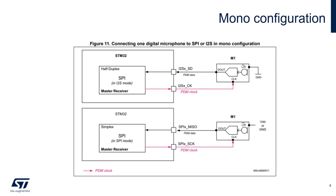Let's start with the case in which a single digital microphone is connected to the SPI block. The SPI block can be configured either in SPI or I2S mode, and in both cases it is configured in master receiver mode. In this way the peripheral provides the clock to the digital microphone while the audio samples are acquired through the serial data pin.